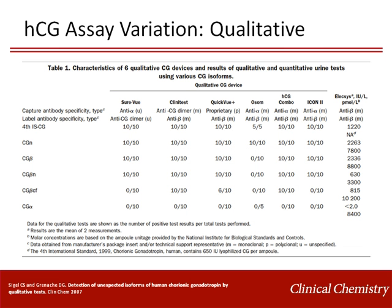Analytical variation is not restricted to just quantitative HCG tests. Qualitative HCG tests also demonstrate variability regarding their ability to detect HCG variants. While all can detect dimeric HCG variants, intact HCG, and nicked HCG, other HCG variants are variably detected. In this study, all but one of the qualitative devices evaluated detected the free beta subunit and the nicked free beta subunit, and a few were also capable of detecting the beta core fragment. As might be expected, none of the devices detected the free alpha subunit of HCG.